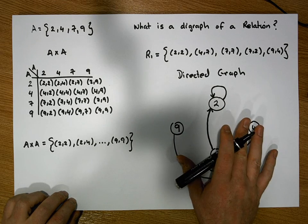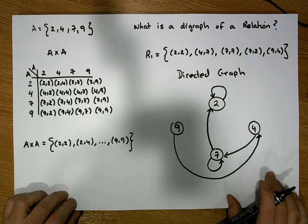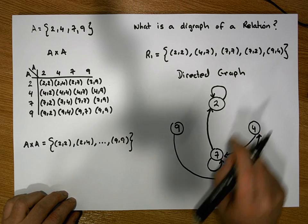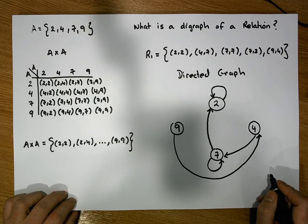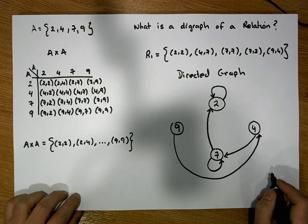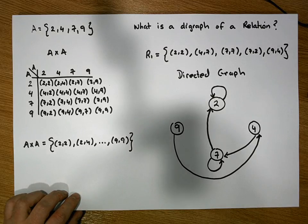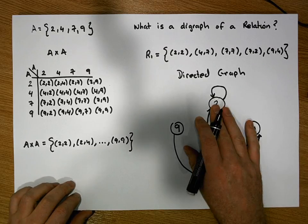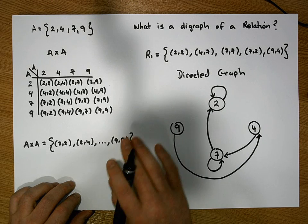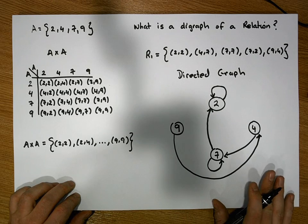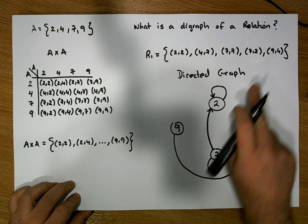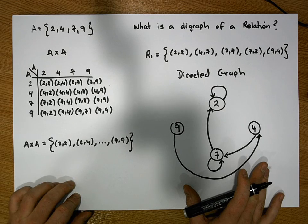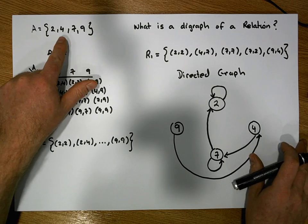This structure is what's known as a directed graph or digraph for a relation. Digraphs are very good structures for identifying certain properties of relations — for example, we might want to identify whether a relation is reflexive, symmetric, transitive, or whether it's an equivalence relation. In a video to follow, we will consider digraphs and show what reflexive, symmetric, and transitive digraphs look like.